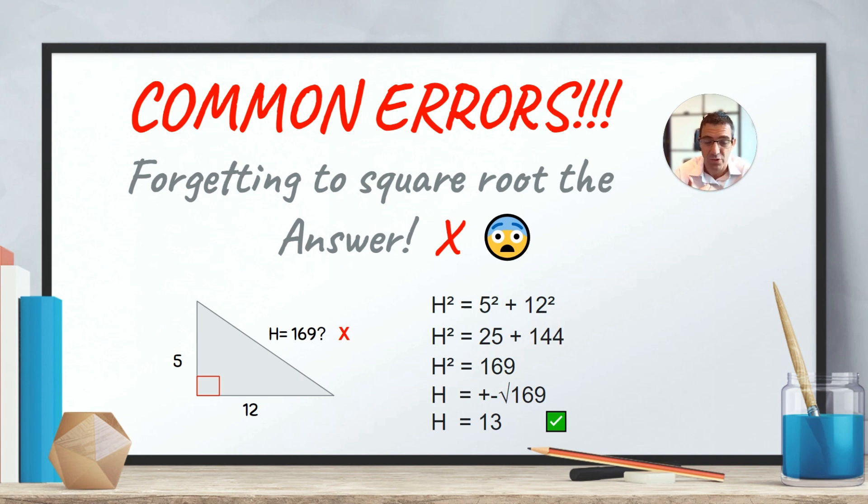However, H is a length. And so we're not interested in the negative 13 value because negative lengths don't exist. So we're just going to use the positive 13 value, which is the hypotenuse here. So the hypotenuse is 13. And that makes a lot more sense than H equal 169.